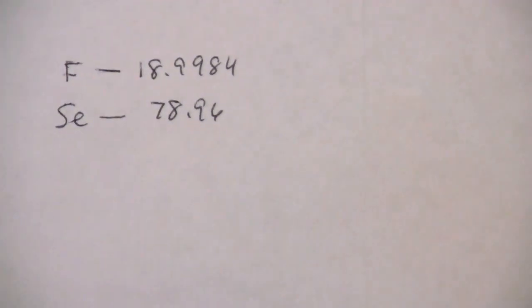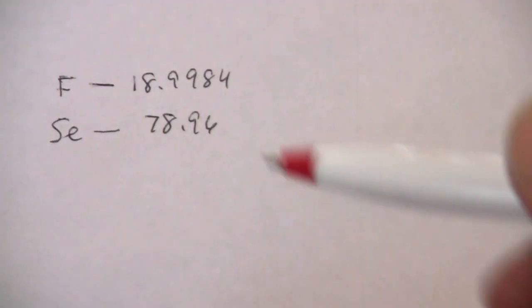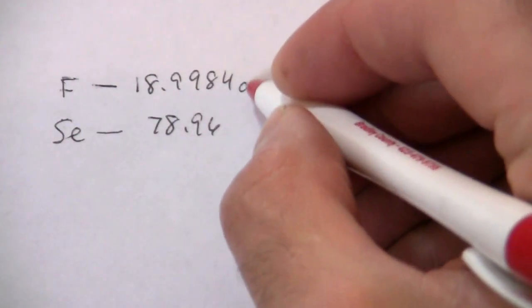Fluorine has a mass of 18.9984 and selenium of 78.96 AMU.